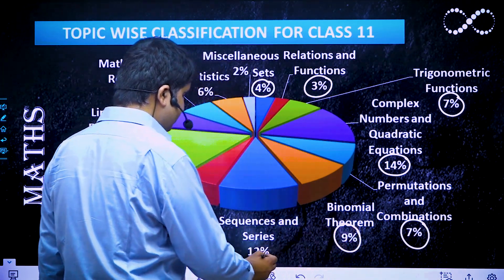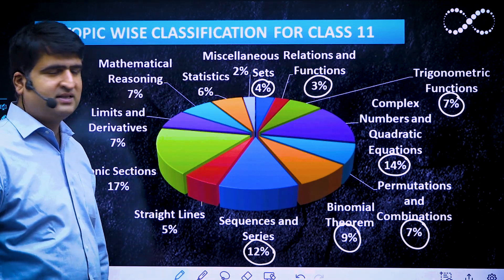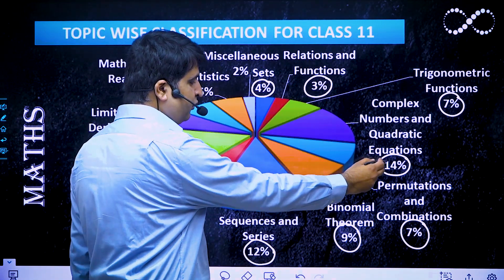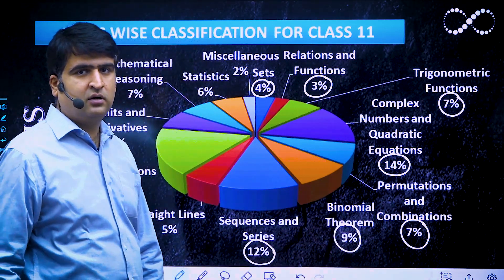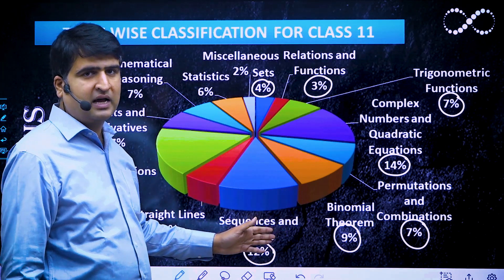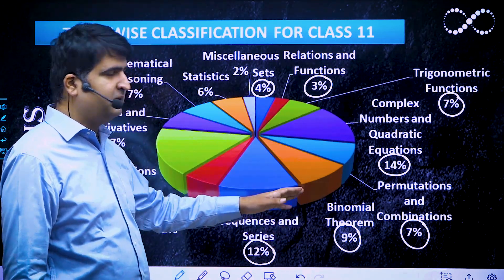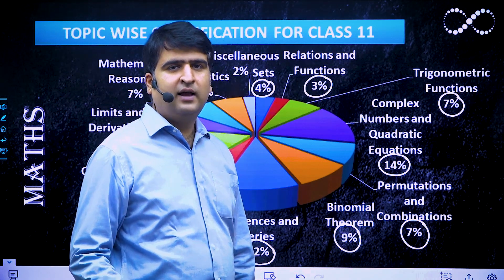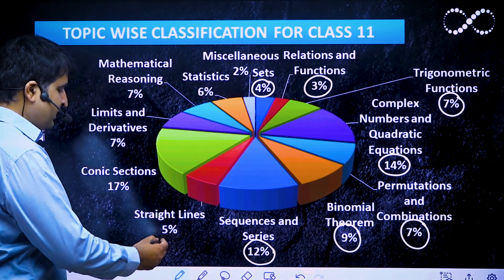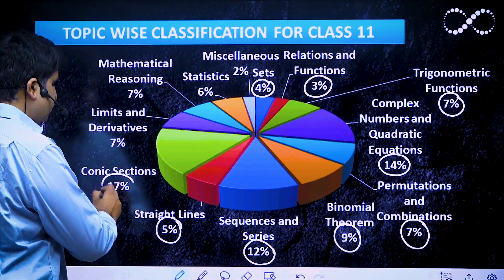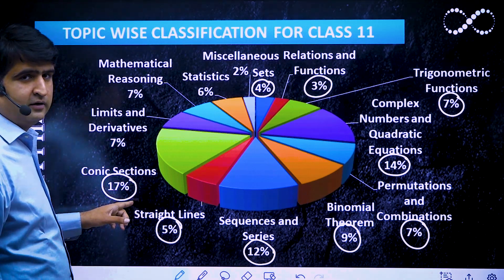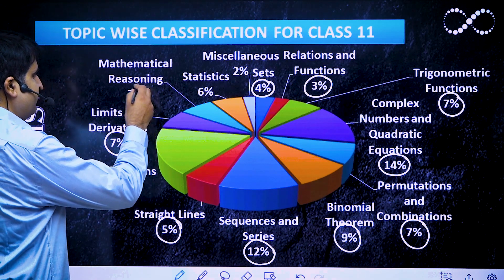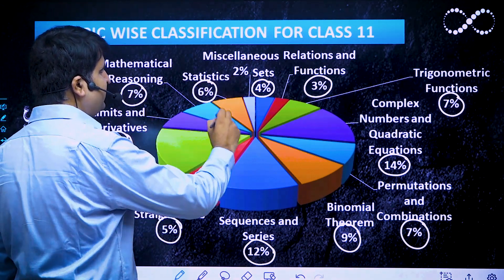Binomial Theorem is 9% and Sequences and Series 12%. In algebra overall, Sets and Relations & Functions total 7%, Complex Numbers 14% — these are hot topics comprising a major portion of Class 11. Trigonometry is 7%, Straight Lines 5%, Conic Sections is the most scoring topic at 17%, Limits and Derivatives 7%, Mathematical Reasoning 7%, and Statistics 6%.